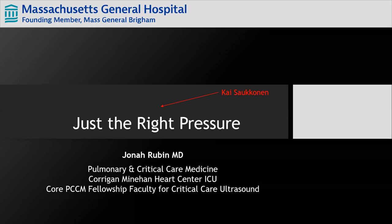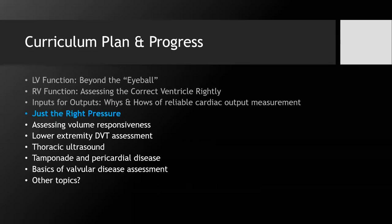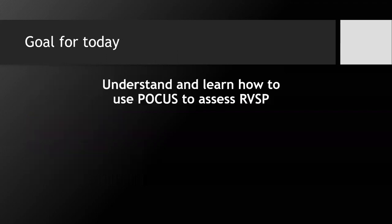Hopefully there will also be some time throughout this for some integrated spaced repetition. So we're talking about RVSP on echo. In our echo curriculum, we're here at the fourth lecture. We talked about LV and RV function a little bit beyond the basics, then had LV function 2.0 when we brought in VTI. You can think of this talk as RV function 2.0. We'll be introducing the RV inflow view and talking about how to accurately measure RVSP — right ventricular systolic pressure. That's our goal for today.